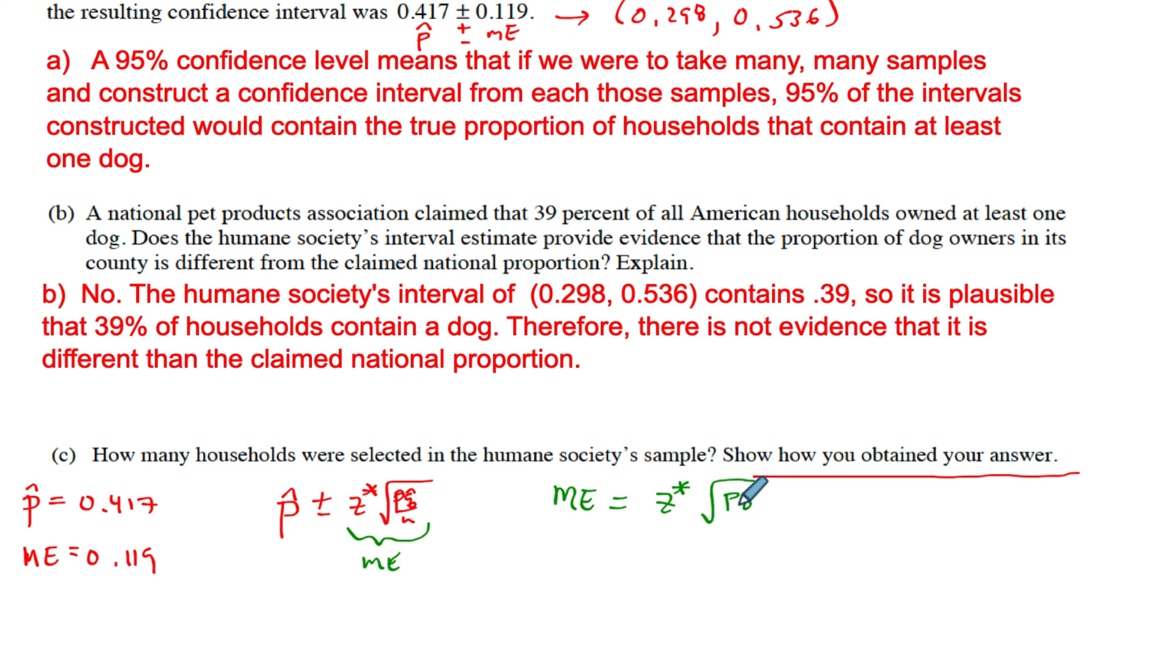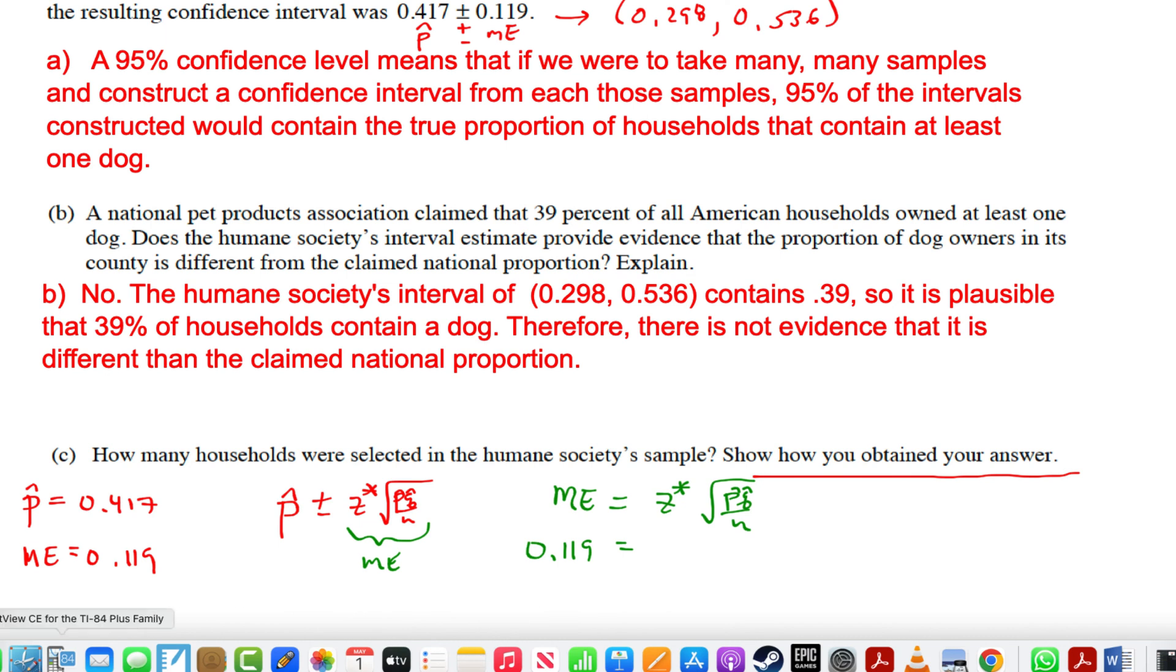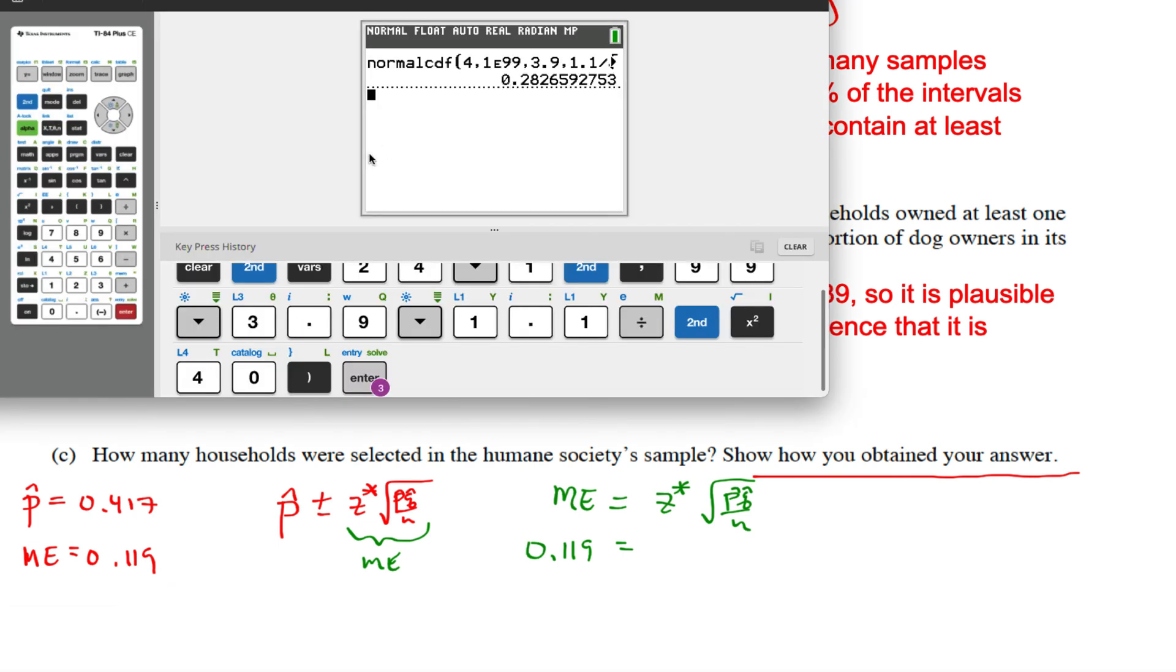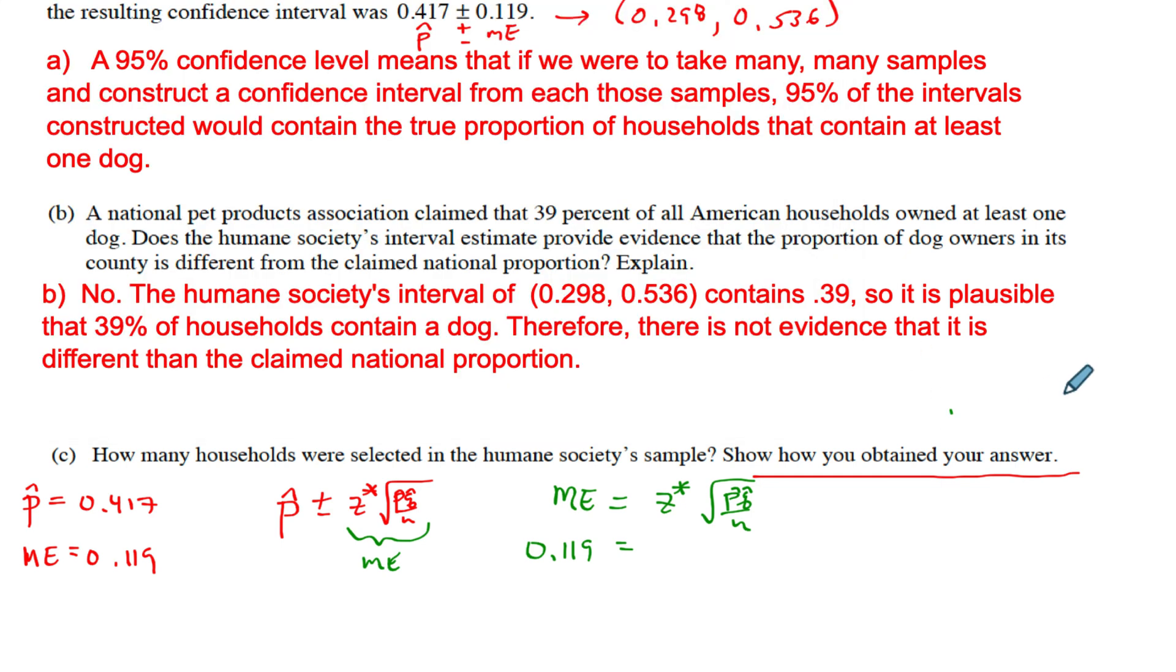The margin of error equals z-star times the square root of p-hat q-hat over n. What values do we know? We know the margin of error, we can substitute that in: 0.119. Z-star here, they said it was 95% confidence. We need to figure that out in our calculator. Figuring out z-star, you need to include the other tail. We want to find how many standard deviations, we're going to use the standard curve for z-score 0, 1.